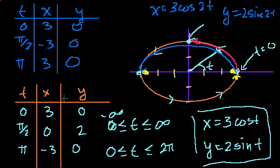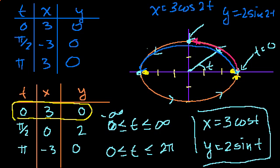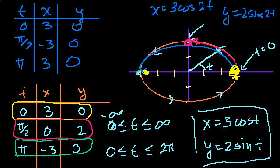So what happened here? In the first set of parametric equations, we established that at t equals 0 we were at point (3, 0), at t equals pi over 2 we were at the top of the ellipse, and at t equals pi we were at (minus 3, 0). That established the direction of motion — if these parametric equations describe some type of motion, it would be counterclockwise.